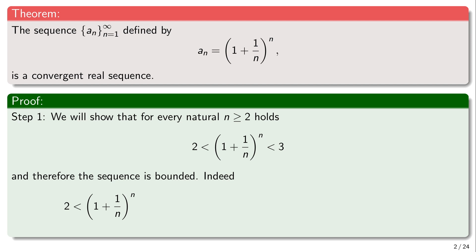The first step of the proof will be to show that this sequence is bounded. We can show that for any n greater than or equal to 2, this sequence is bounded between 2 and 3. The important thing is that this sequence is bounded from above, so let's see how we do it.